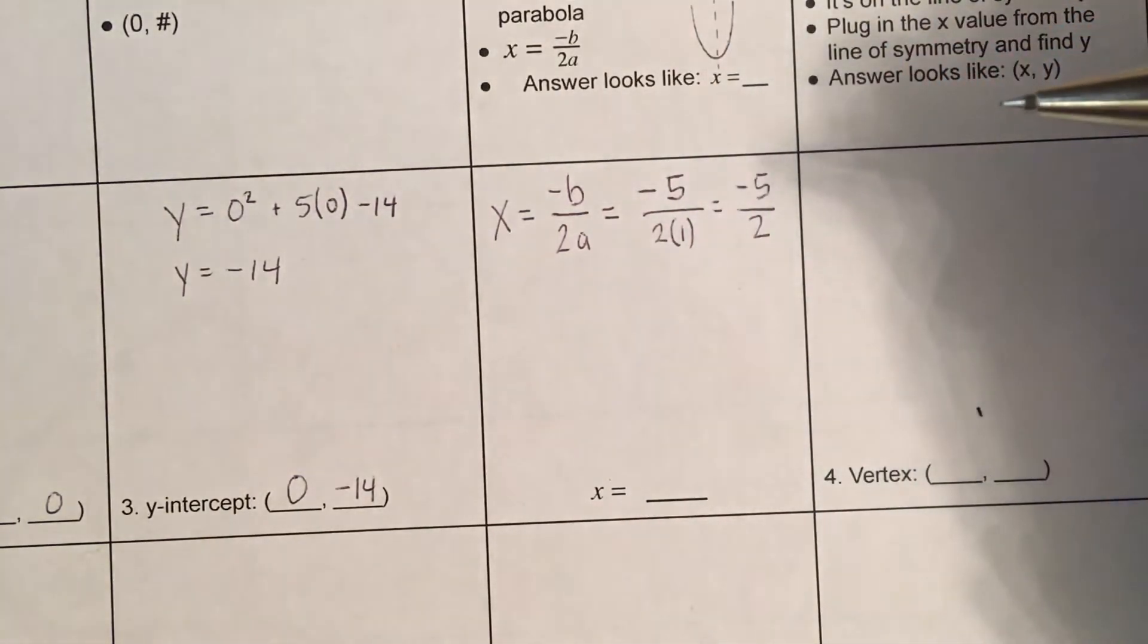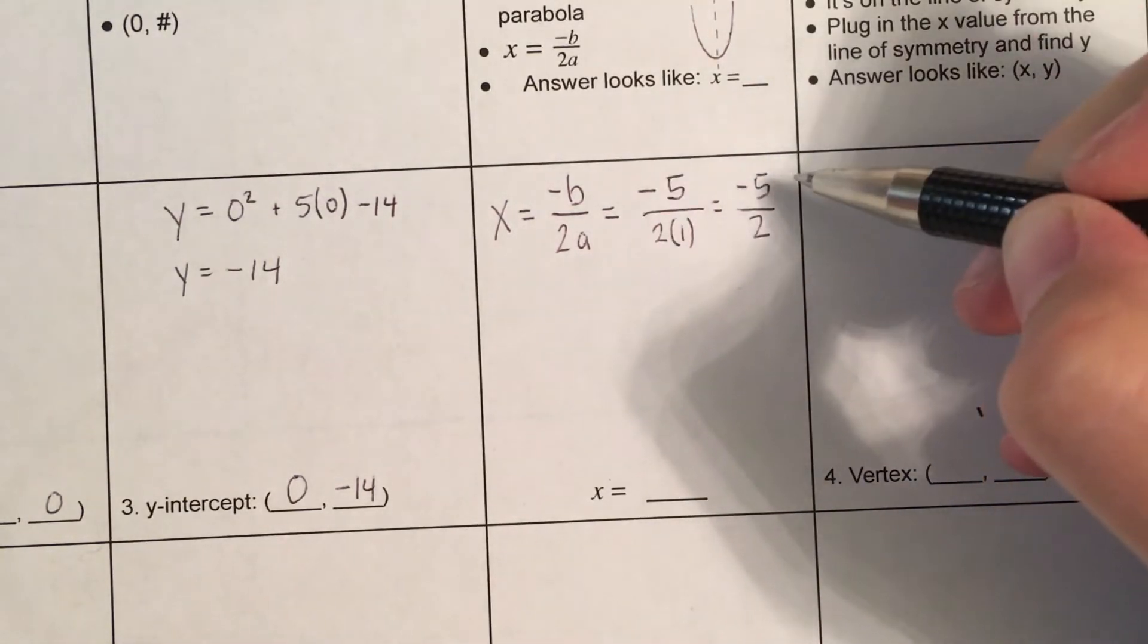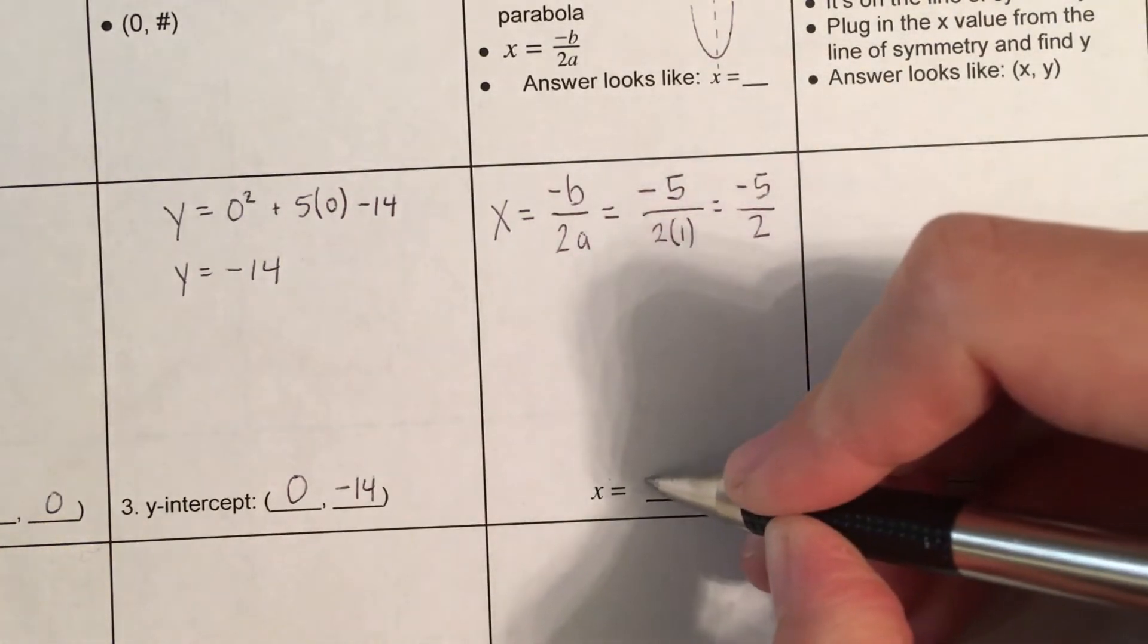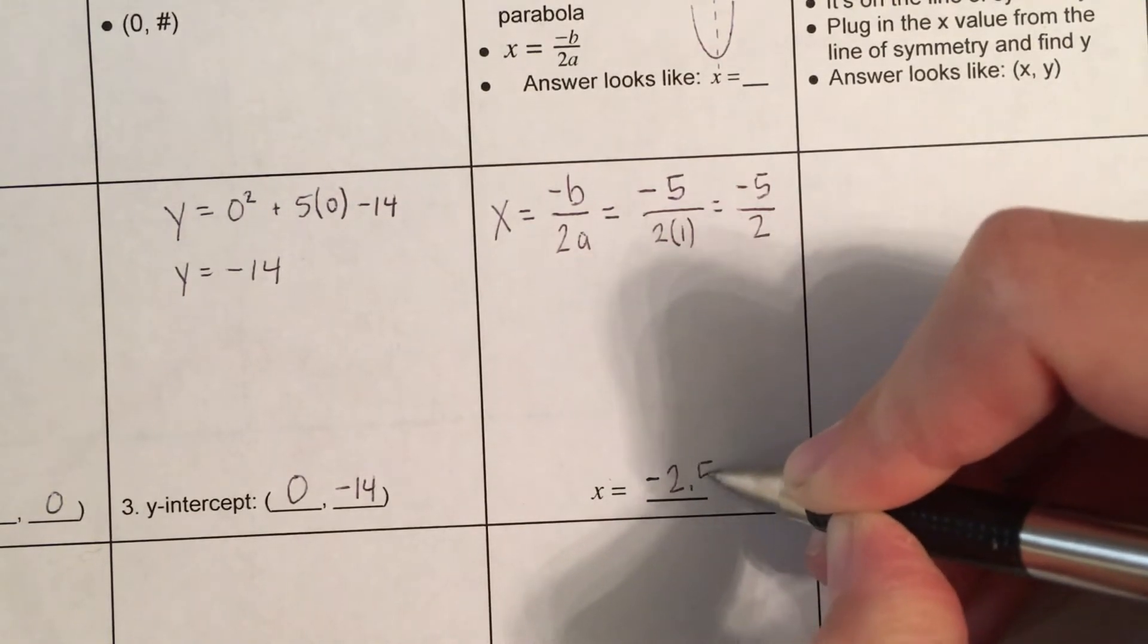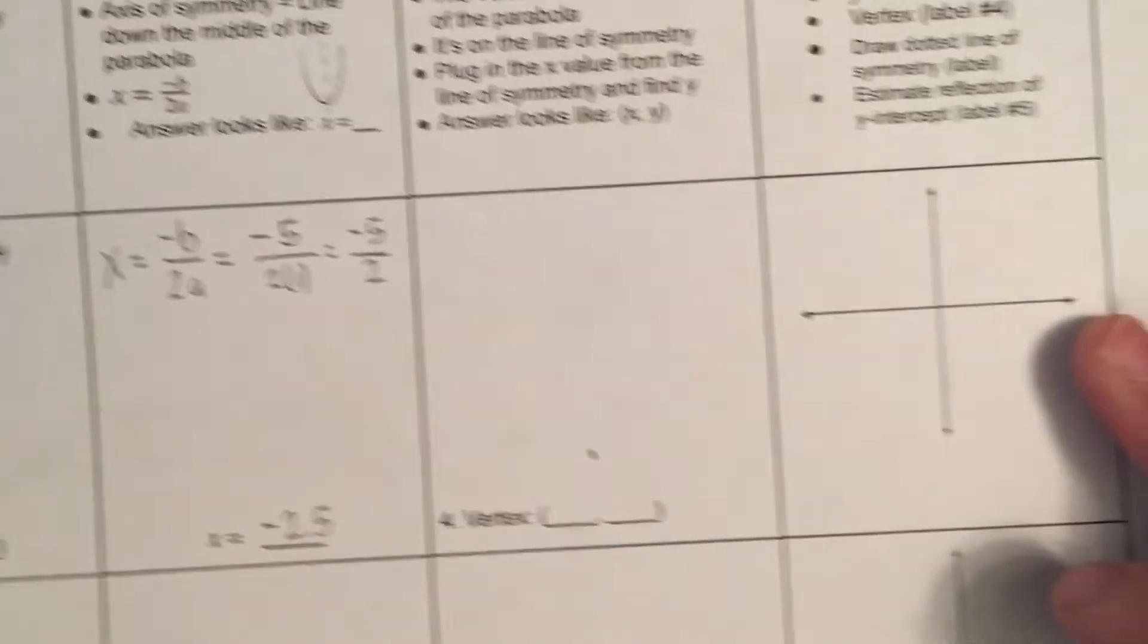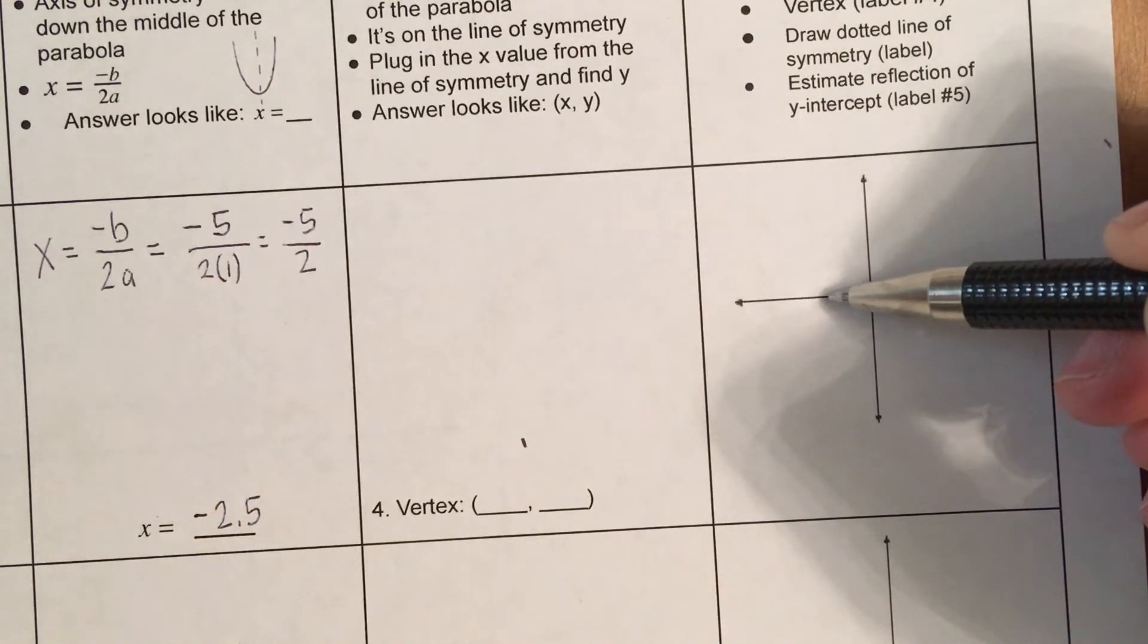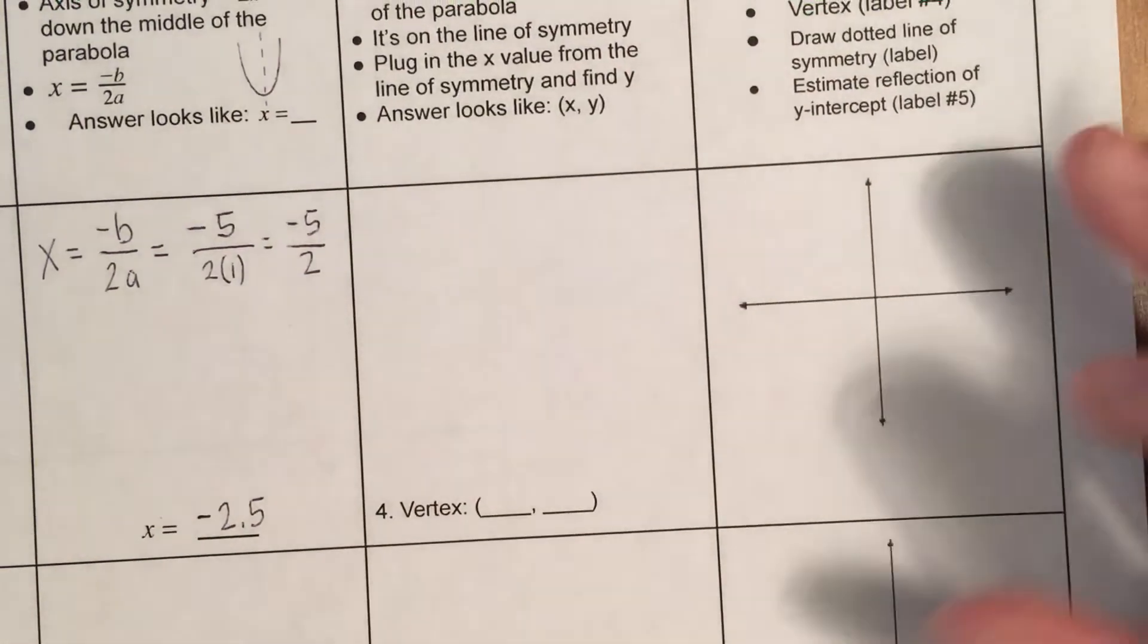Now, for the sake of being able to graph this easily, and also for the sake of, we're going to plug it in in a second, we're going to make this into a decimal. Or you can make it into a mixed number. So, negative 5 divided by 2 is negative, you could write 2 and a half or 2.5. Just to be more comfortable with decimals. But 2 and a half is also fine. So, that is the line that the parabola flips over. So, where x is negative 2.5, so like right here. If this is 2.5, then we would just draw a line right there. That would be our axis of symmetry.